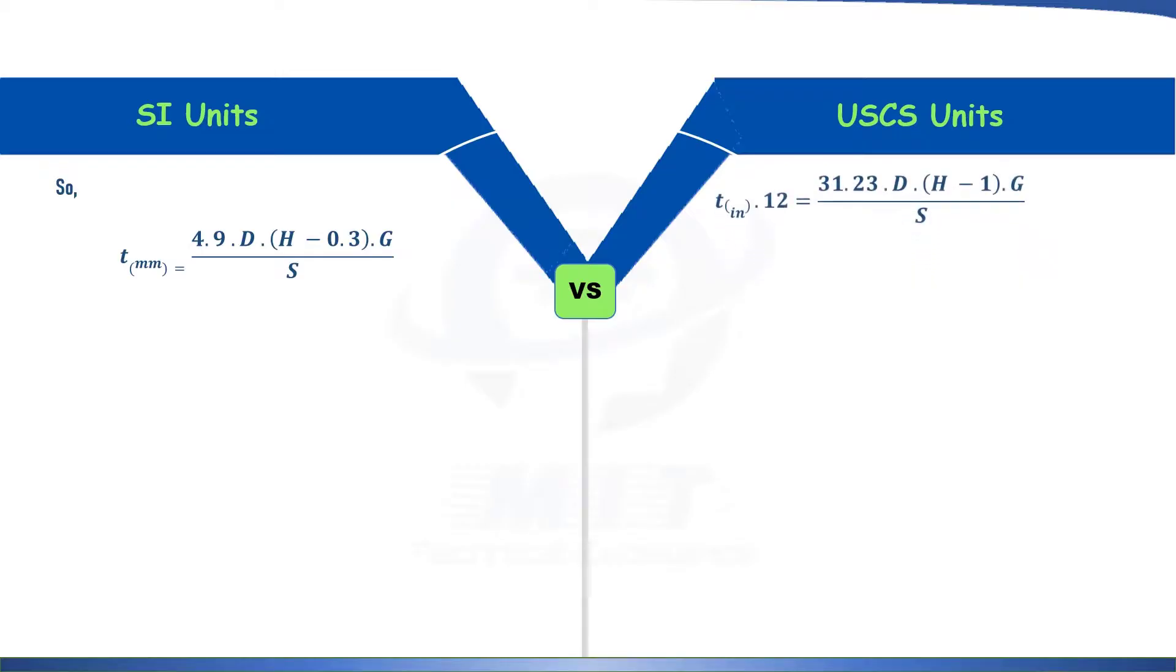Again rearranging and remember we have converted the thickness from higher or bigger unit to a smaller unit. That is for SI unit, we converted it from meter to millimeter. So accordingly 1000 will be multiplied with the equation and that 1000 is cancelled with the density of the water. So we will get this as both 1000s are cancelled. And for USCS unit, we are converting it from feet to inches. So it is multiplied by 12 that we take this 12 on the other side of the equation and after rearranging we will get for SI unit, thickness in millimeter is 4.9 times diameter times H minus 0.3 times specific gravity over stress. And for USCS unit, thickness in inches equal to 2.6 times diameter times H minus 1 times specific gravity over stress.